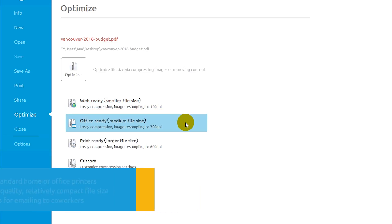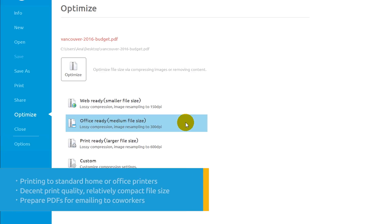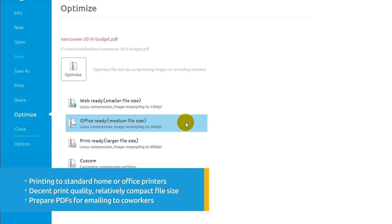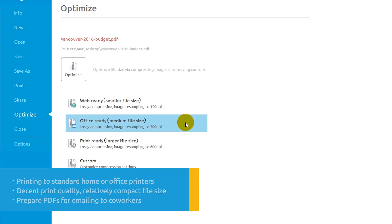OfficeReady creates files that are optimized for printing to standard home or office printers. Use this setting when you want to create a file that retains decent print quality when printed to a general-use printer, while remaining relatively compact in terms of file size — for example, in preparing PDFs for emailing to coworkers.